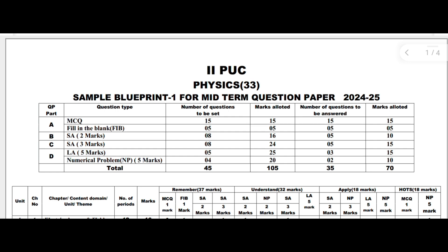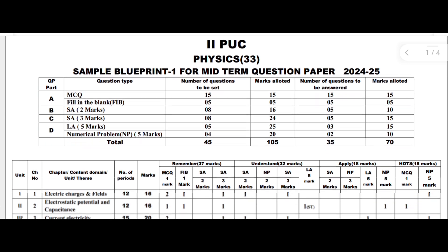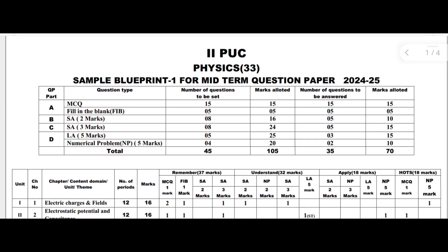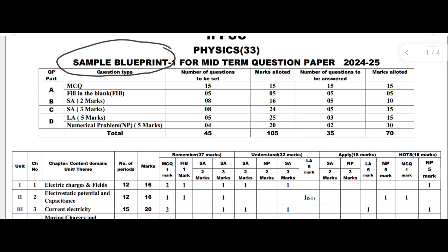Dear students, this is the model blueprint for the physics midterm exam for 2024-25. Here you can see the marks allotment for different chapters included in the midterm exam. This is the first sample blueprint, and the different sections are: MCQ, fill in the blank, short answers 2 mark, short answers 3 mark, long answers 5 mark, and numericals 5 mark.